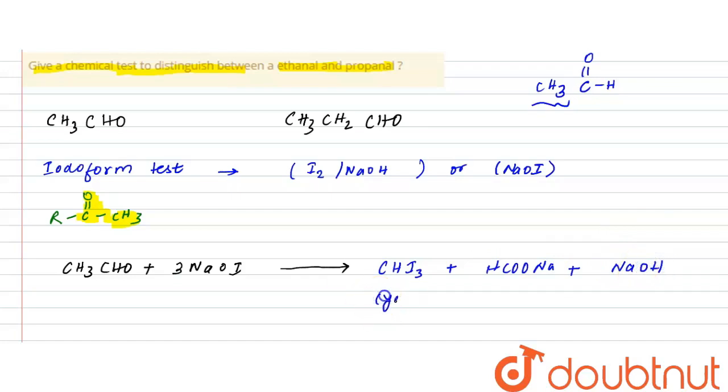You can easily balance the reaction. This is the yellow ppt which will be formed, and hence through this yellow ppt of CHI3 you can easily distinguish. If you balance the reaction, then there will be two NaOH and finally three NaOI. Now you can see the reaction is completely balanced.